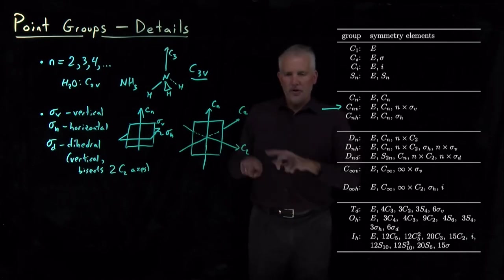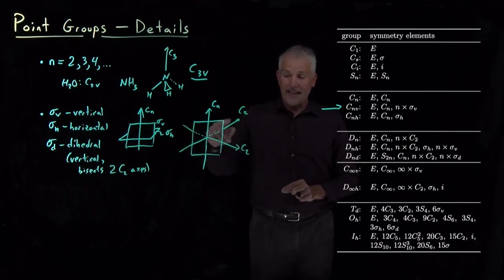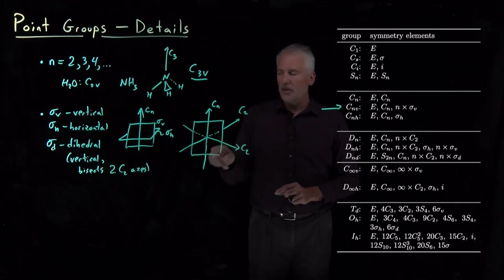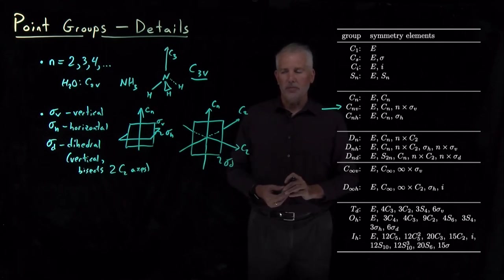If there's a vertical plane that bisects these two C2 axes, cuts them in half, splits them down the middle, then we would call this a dihedral reflection plane rather than a vertical reflection plane.